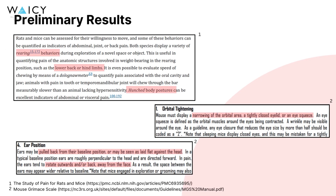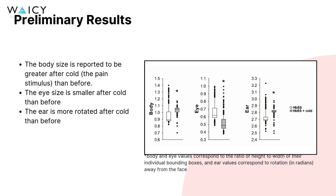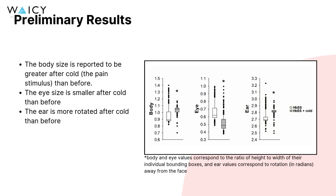As supported by various articles and evidenced by the mouse grimace scale, a hunched body posture, squinting of the eye, and increased rotation of the ear away from the face is indicative of a painful response. This is a plot of the body, eye, and ear detections of a mouse before and after a painful stimulus was given.